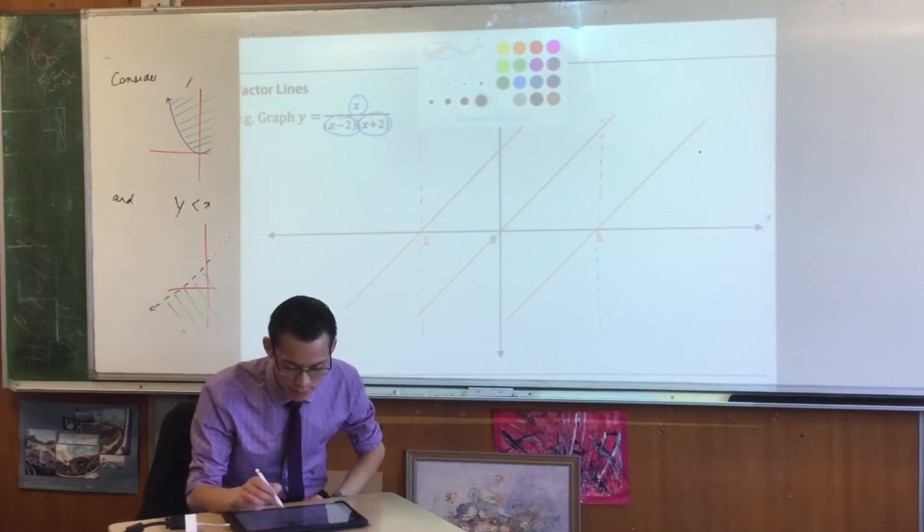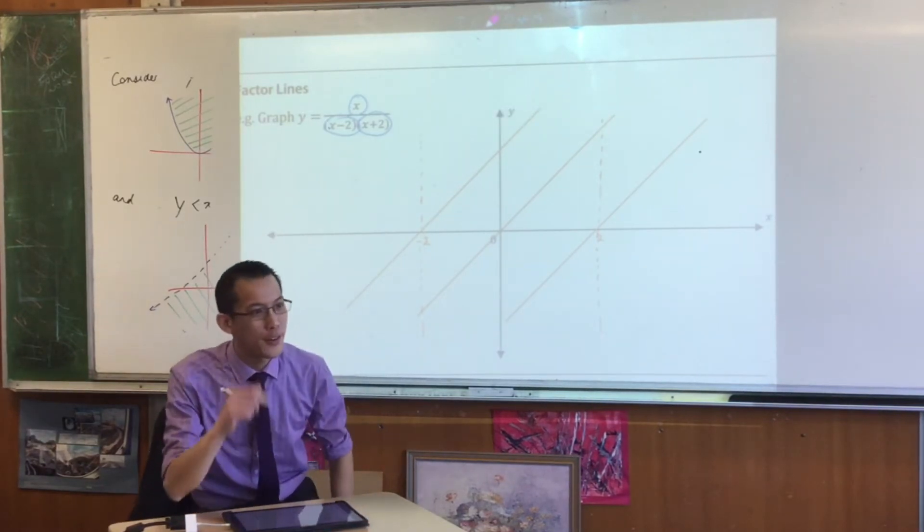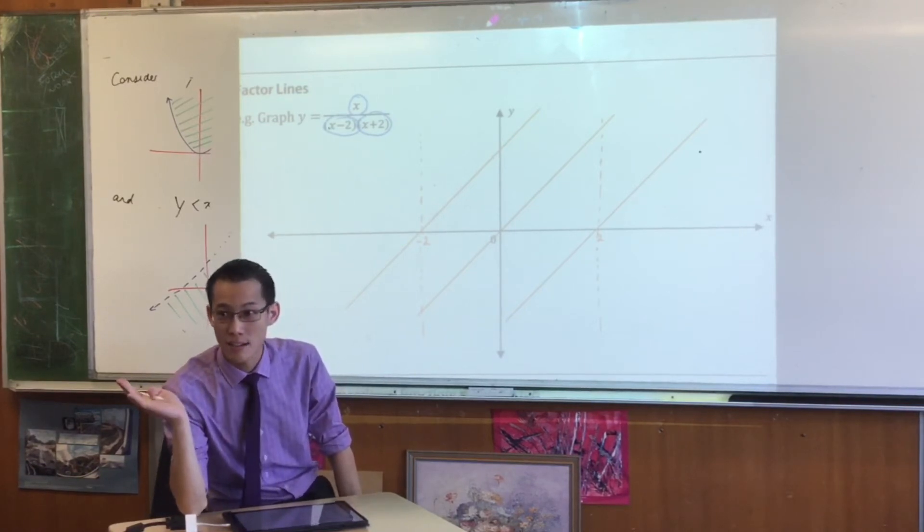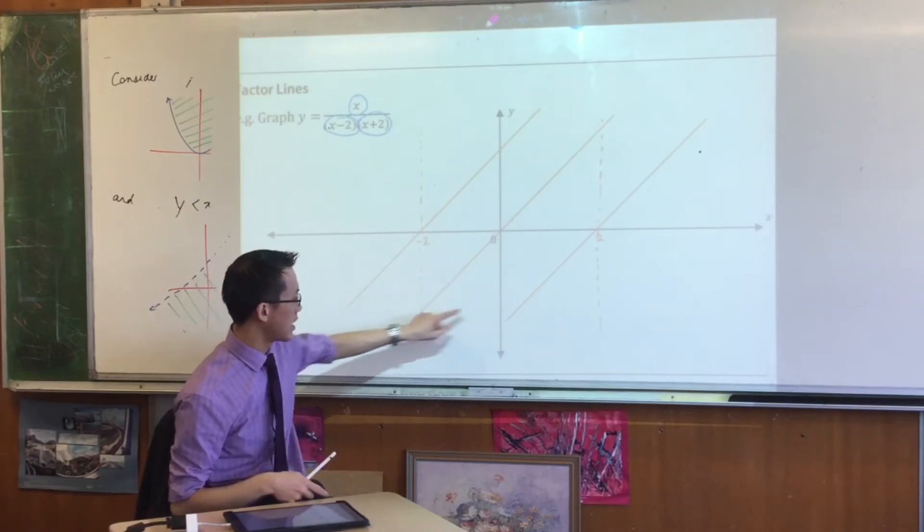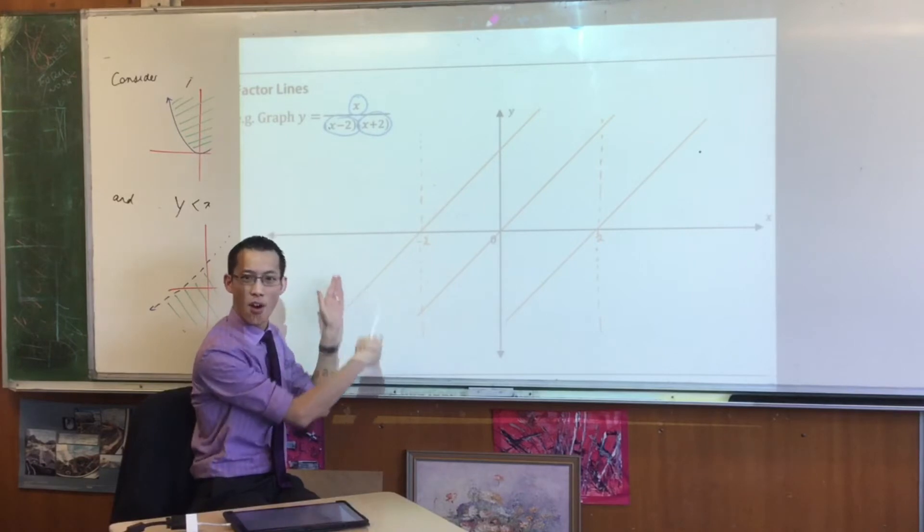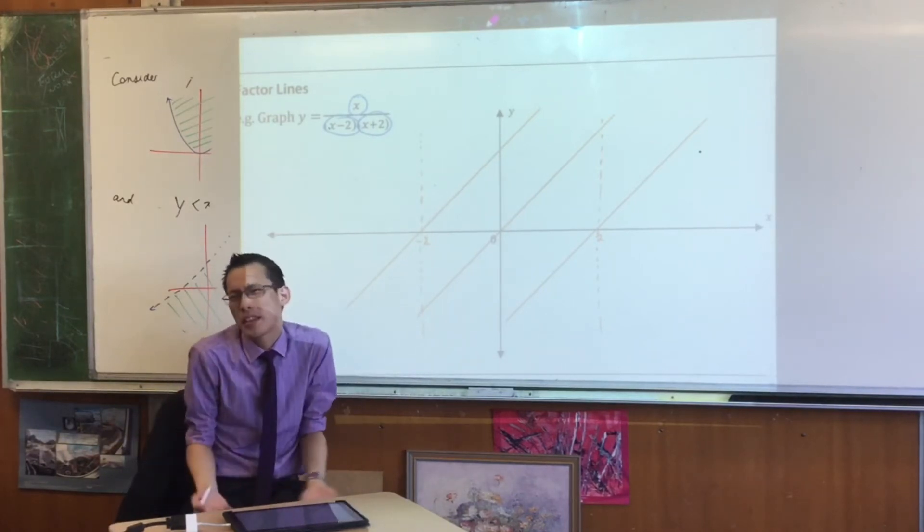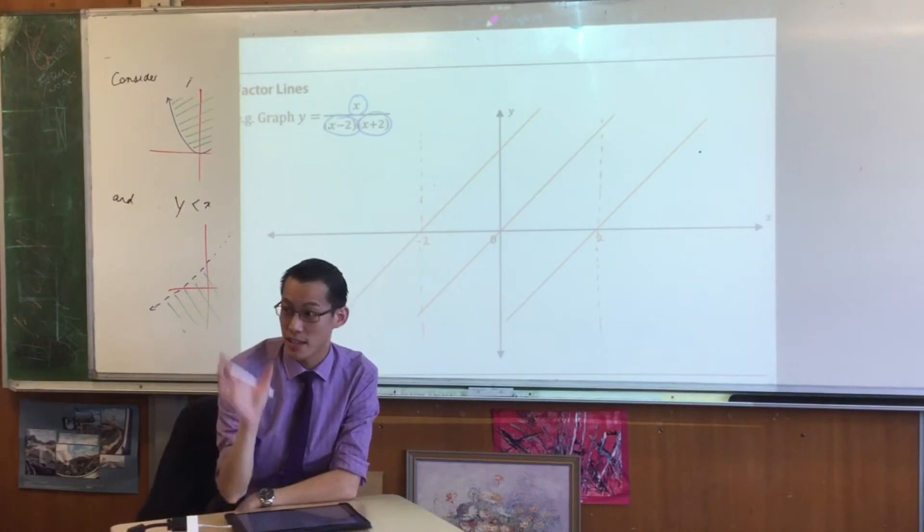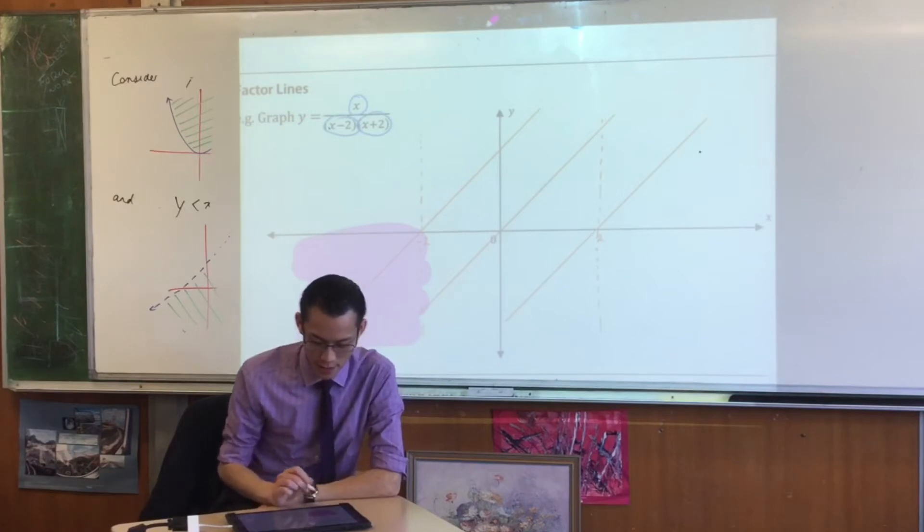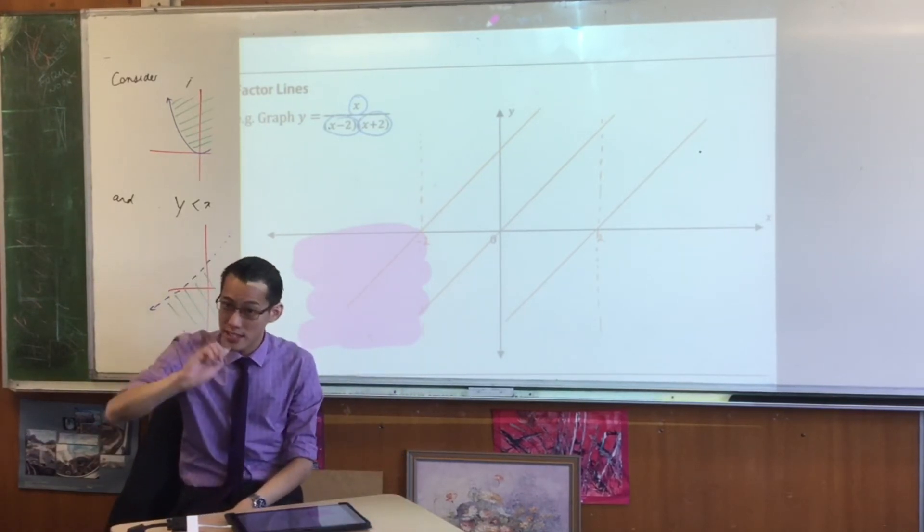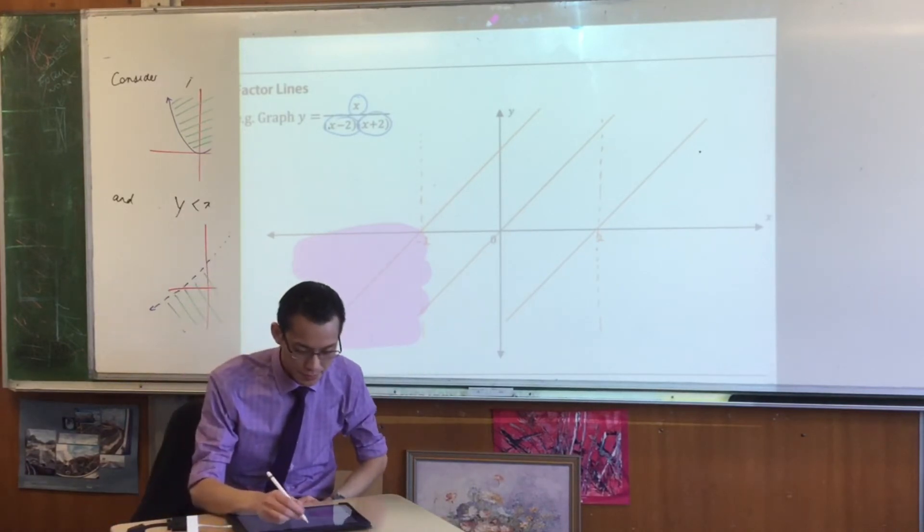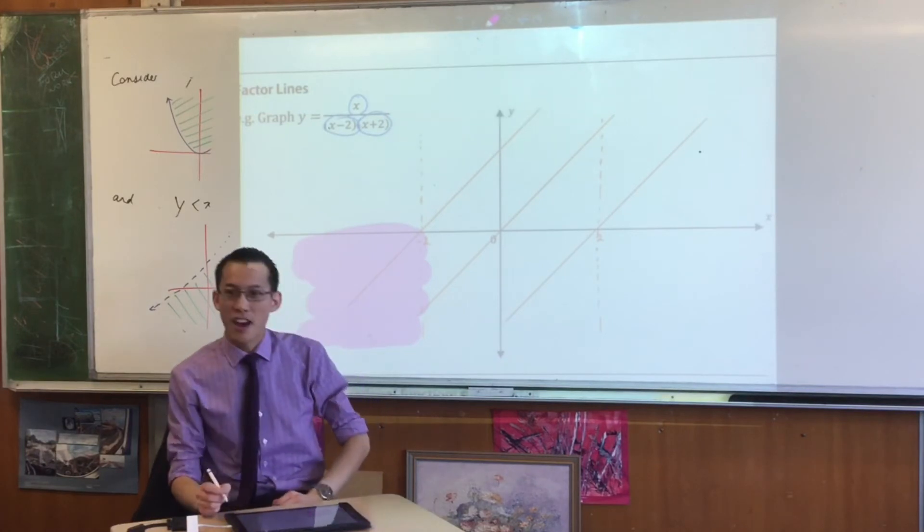If you've got a negative and a negative and a negative when you multiply or divide them together you're going to get a negative. Over here to the left of negative 2, all three factors are negative. I don't know what their sizes are but I just need their sign. Three negatives will give you a negative. So you could shade in this region.